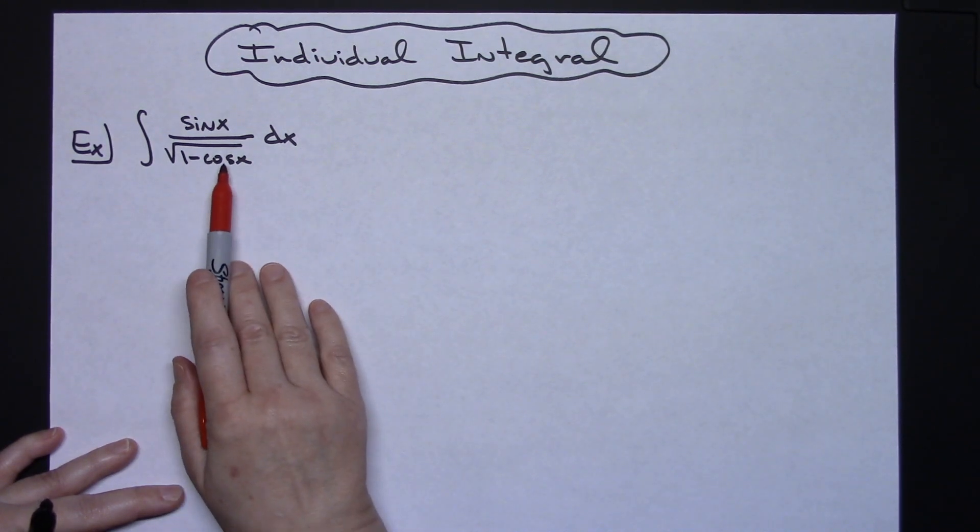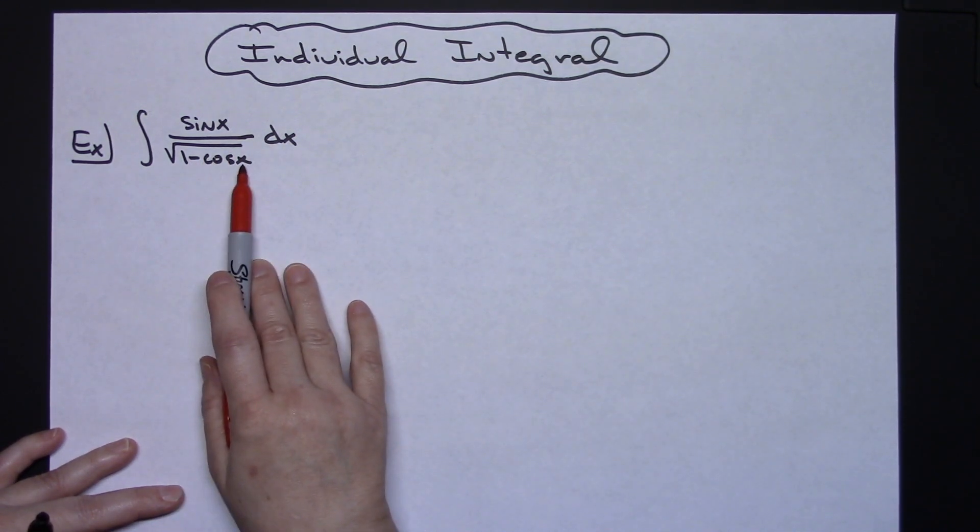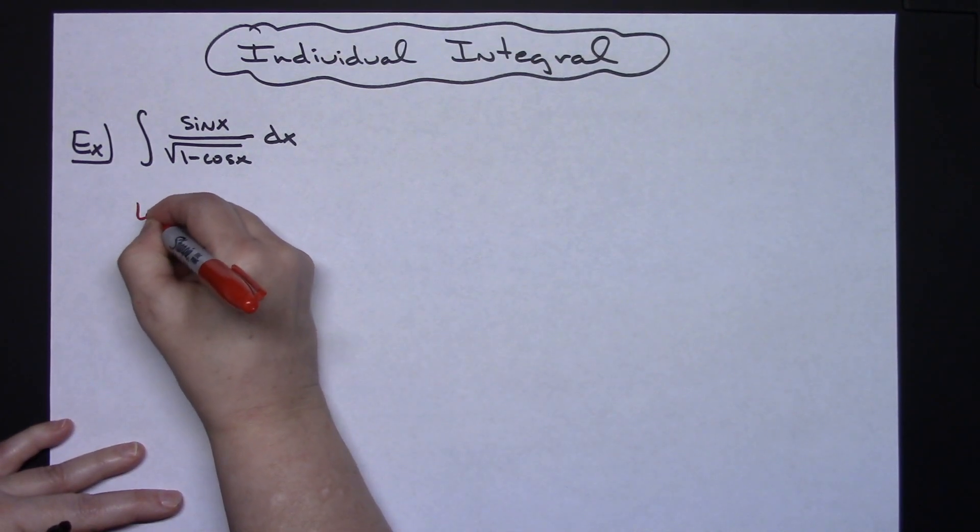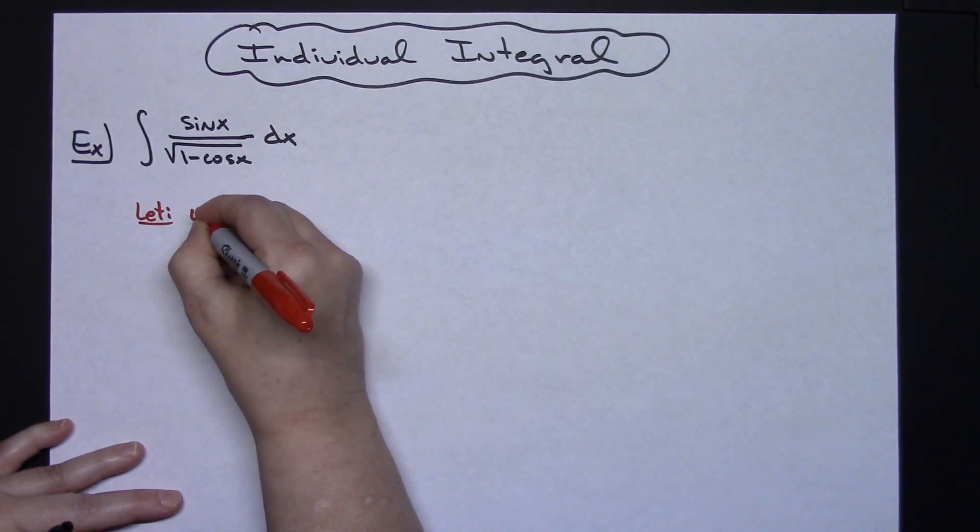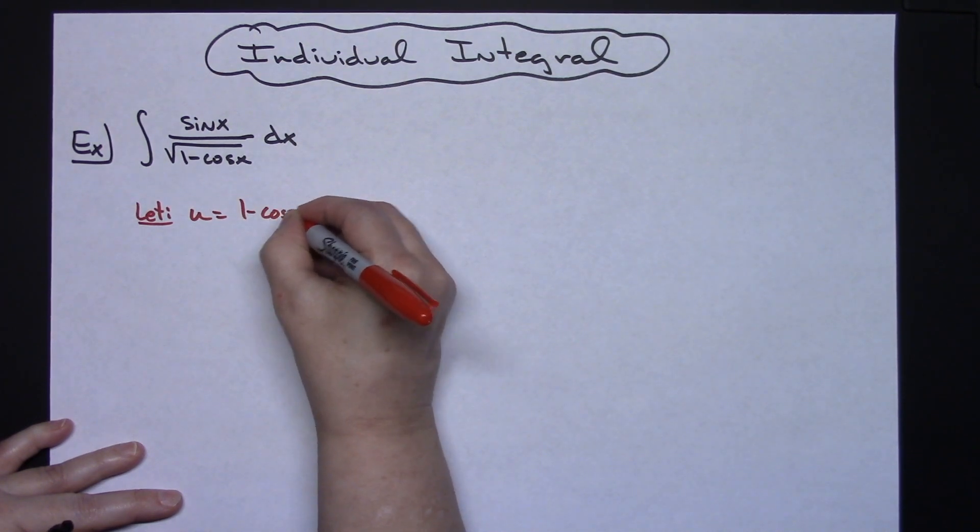So for a u substitution I'm going to look for the inside part of any composite function that I might see there. In that denominator I've got the 1 minus cosine x on the inside of the radical. So that's where I'm going to start with letting u equal that. So u is going to be equal to 1 minus cosine x.